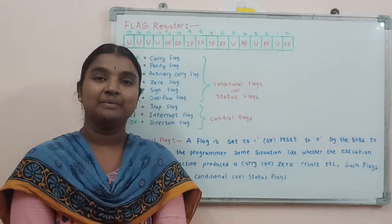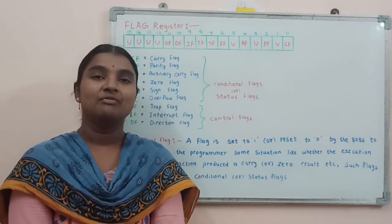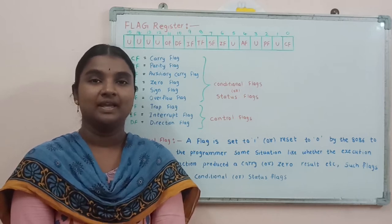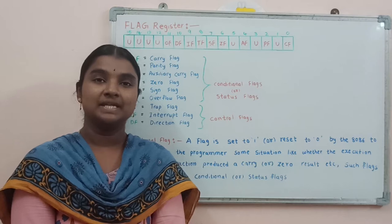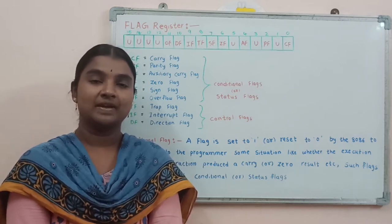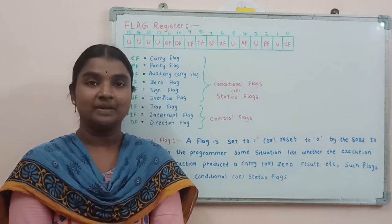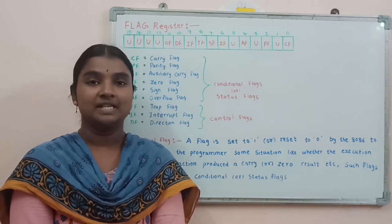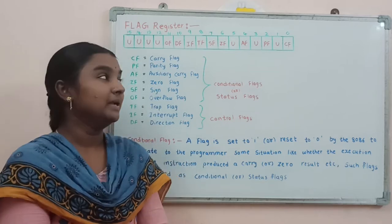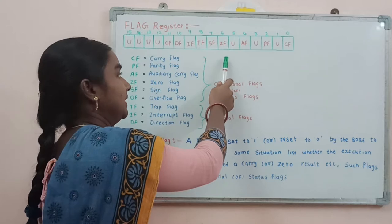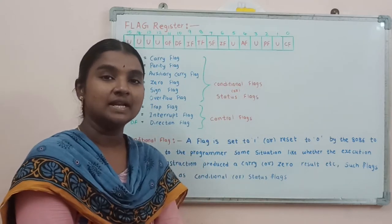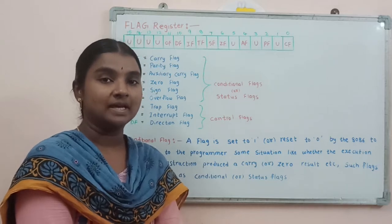In this video, I am going to explain about the flag register of the 8086 microprocessor. A flag is a flip-flop which indicates some conditions produced by the execution of an instruction, or controls certain operations of the execution unit. This flag register is a 16-bit register, and in it only 9 flags are active flags — all other remaining flags are undefined.